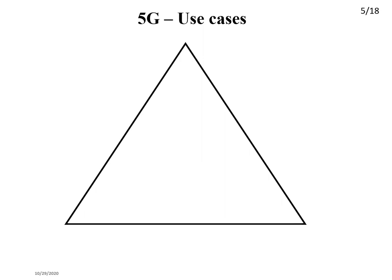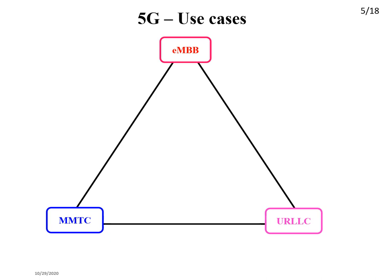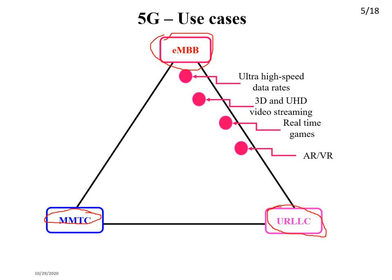The 5G use cases form the 'magic triangle': eMBB (enhanced mobile broadband) for high data rates, mMTC (massive machine type communication) for billions of connected devices, and URLLC (ultra-reliable low latency communication) for latency-critical applications. Some eMBB use cases include ultra-high-speed downloads in seconds, 3D and ultra-HD video streaming, real-time gaming, augmented reality, and virtual reality.